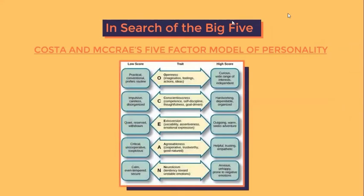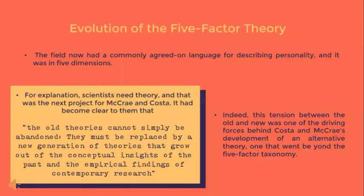The five-factor model focuses on conceptualizing traits as a spectrum rather than black-and-white categories, recognizing that most individuals are not on the polar ends but rather somewhere in between. To easily remember the five factors, we have OCEAN or CANOE as acronyms for the personality factors. Originally, the five factors constituted nothing more than a taxonomy — a classification of basic personality traits. By the late 1980s, Costa and McCrae became confident they had found a stable structure of personality, answering the first central question: what is the structure of personality?